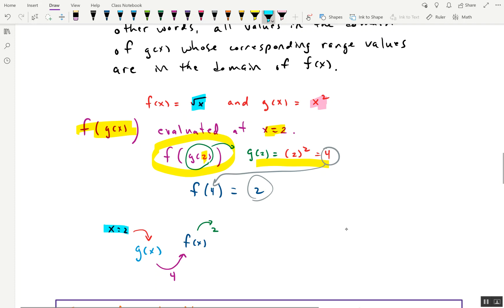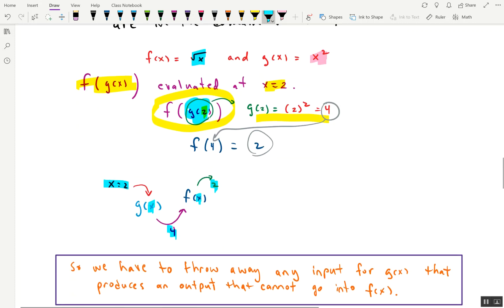We start with a value. We plug it into g as an input. It gives us an output, which is four, and that four gets plugged into f as an input, and that gives us an output of two. So if we look at the inside function here, g, the output of g is actually the input of f.